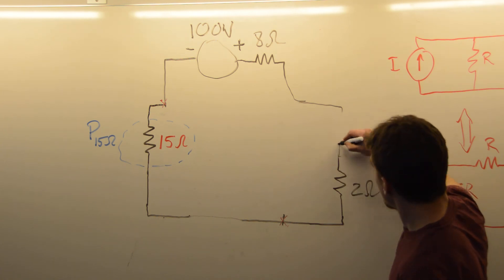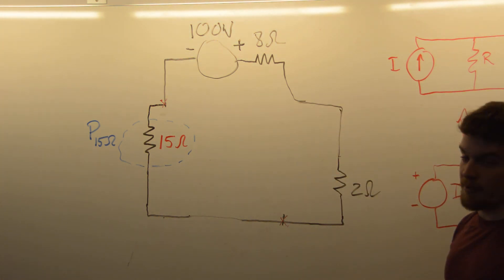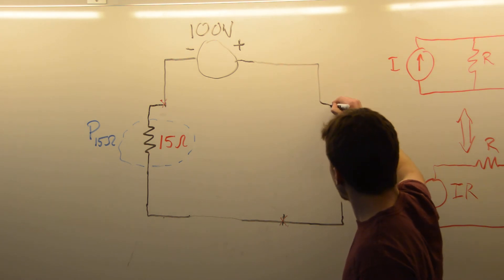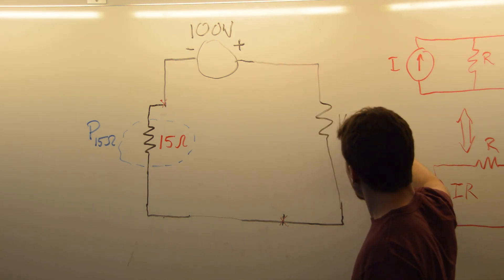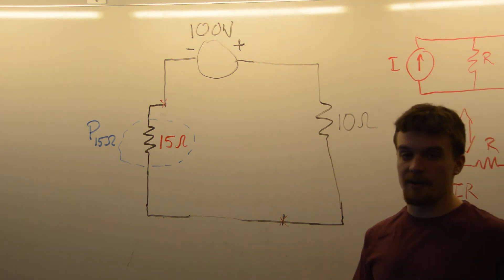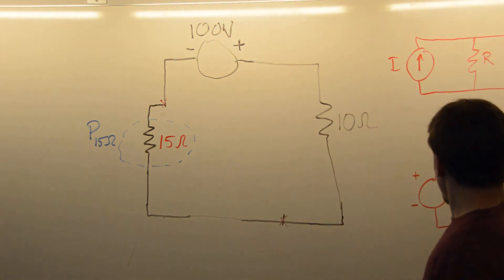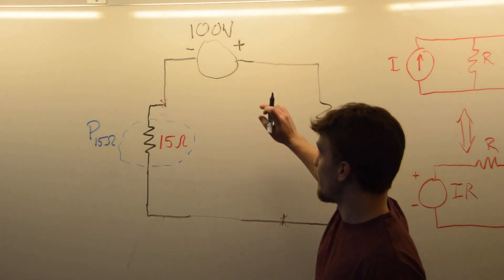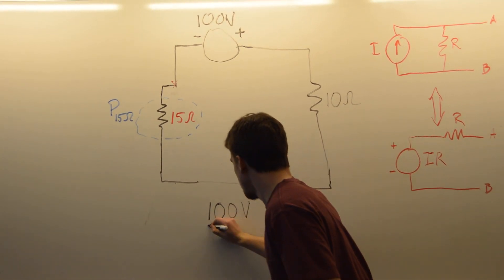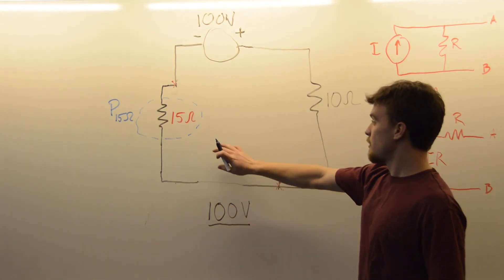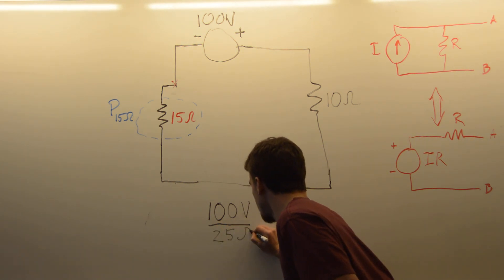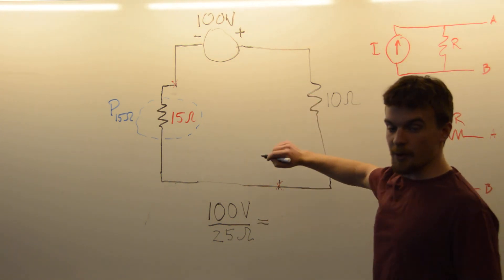The resistors are in series, so they can add to a 10-ohm resistor, and we'll put that somewhere in here. Now we should be able to solve for the current through this loop. The current through this loop is going to equal 100 volts divided by the total resistance — 15 plus 10 — which is going to be equal to 25 ohms. That's going to give us a loop current of 4 amps.